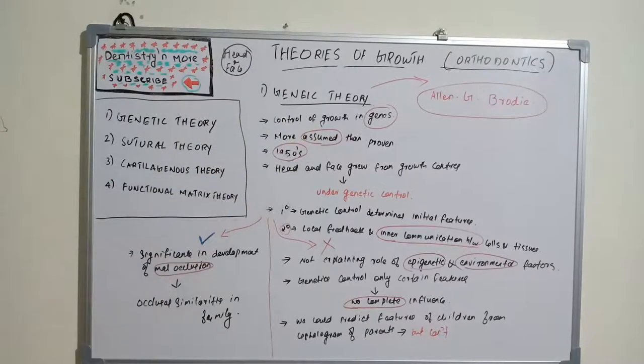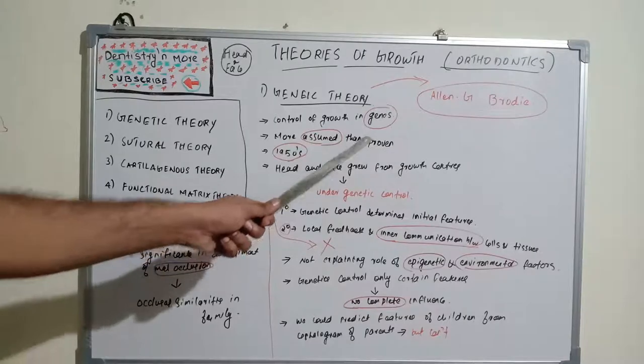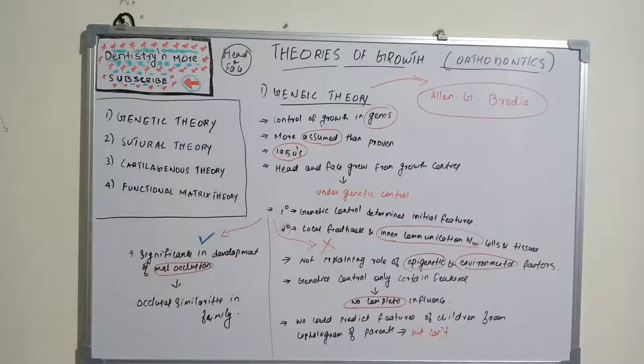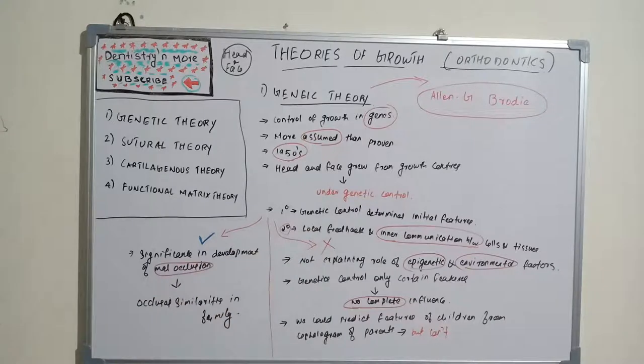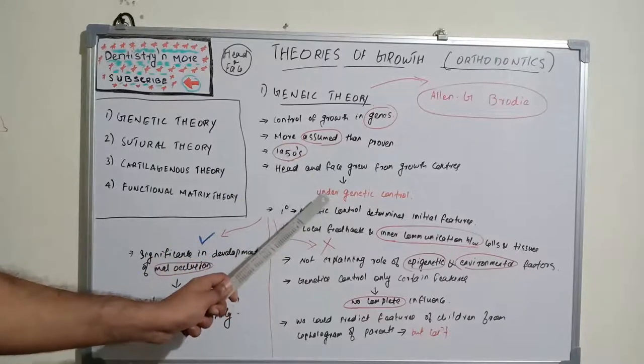It is more of an assumed theory than a proven one. There is no proof for this theory. According to this theory, head and face grew from growth centers under strict genetic control.